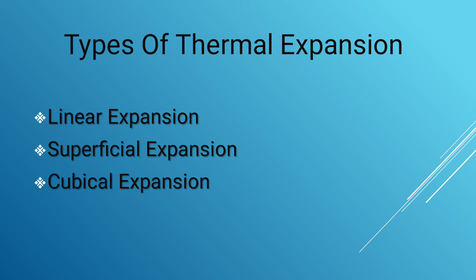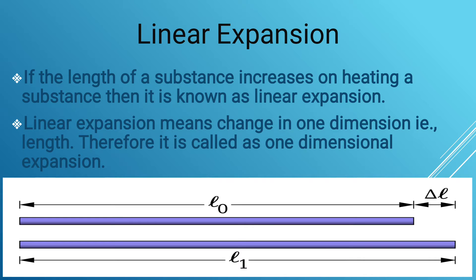If the length of a substance increases on heating, it is known as linear expansion. Linear expansion means change in one dimension — that is, length — therefore it is also called one-dimensional expansion. For example, there is one rod of length L0 before heating. When that rod is subjected to heating, its size increases to L1. The change in length is known as delta L, where delta L equals L1 minus L0.